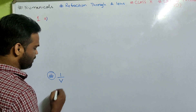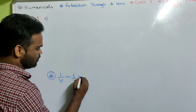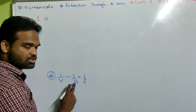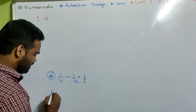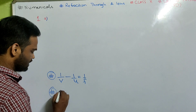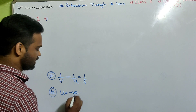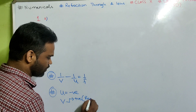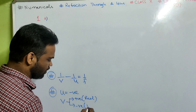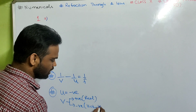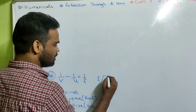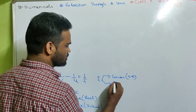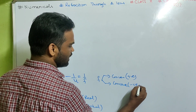First of all, the lens formula: 1/V minus 1/U equals 1/F. V is image distance, U is object distance, F is focal length. Sign convention: remember that the object distance is always negative. Image distance will be positive in case of a real image, negative in case of a virtual image. Focal length is positive for a convex lens and negative for a concave lens.